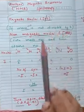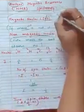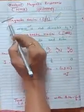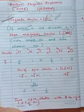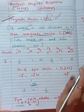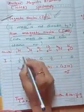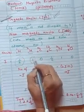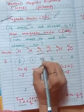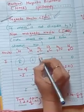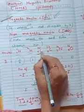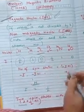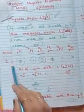The first condition for a nucleus to be NMR active is that it should be magnetic — its spin should be non-zero. Magnetic nuclei will give NMR spectroscopy. For example, proton has spin one-half, deuterium has spin one, and ¹²C (carbon-12) has spin zero because both its mass number and atomic number are even.